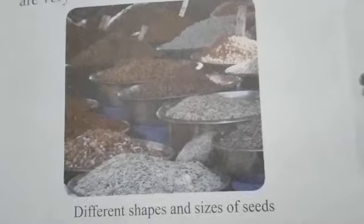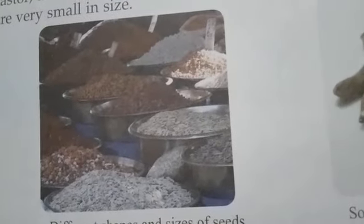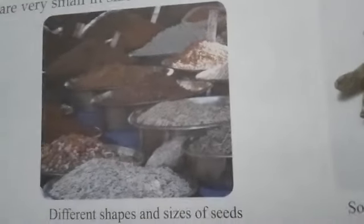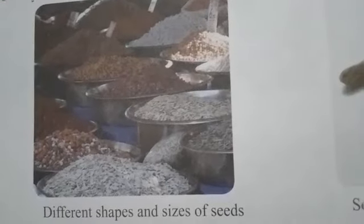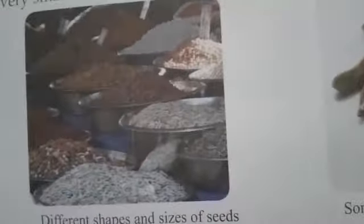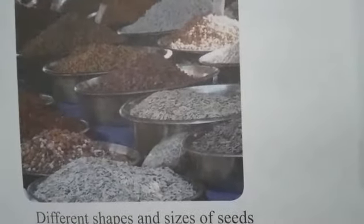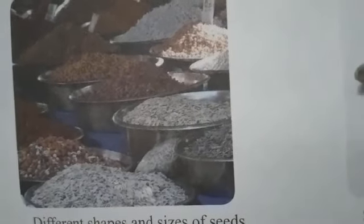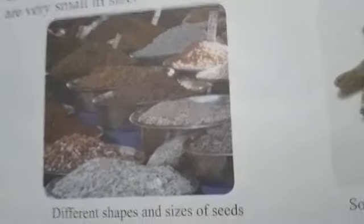Seeds are of different shapes and sizes. Some seeds like castor, datura, and mango are big in size, while the seeds of mustard, cardamom, and cumin are very small in size. Rice, wheat, and peas are also small in size. So, you have learned that the shapes and sizes of seeds are different.